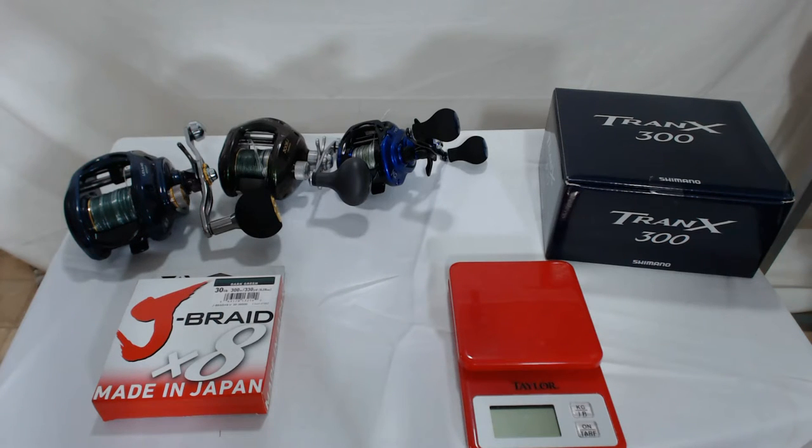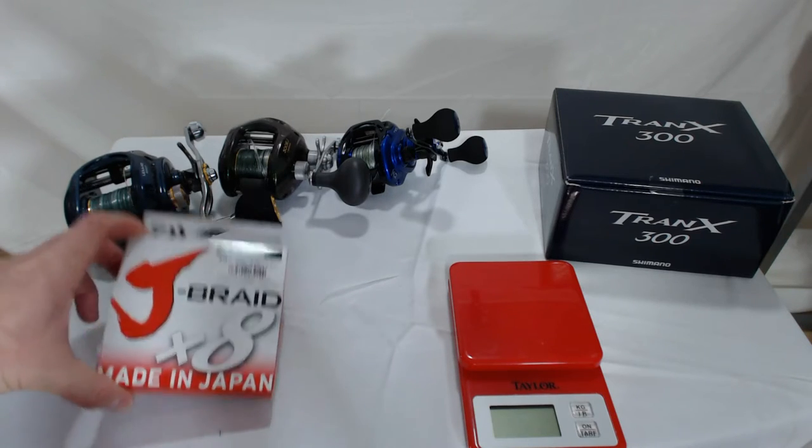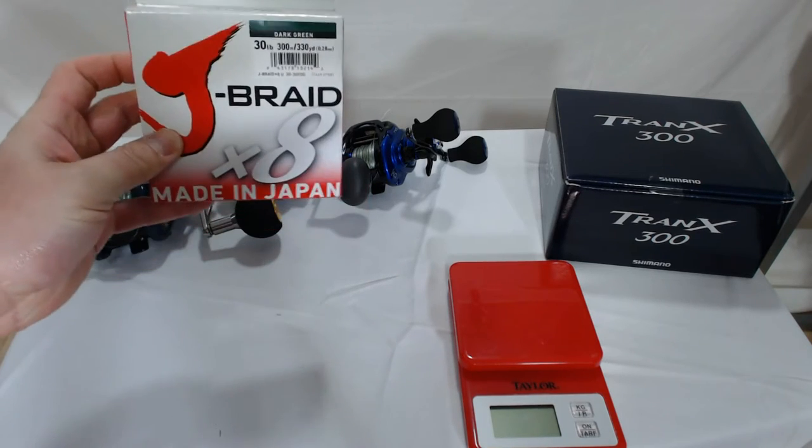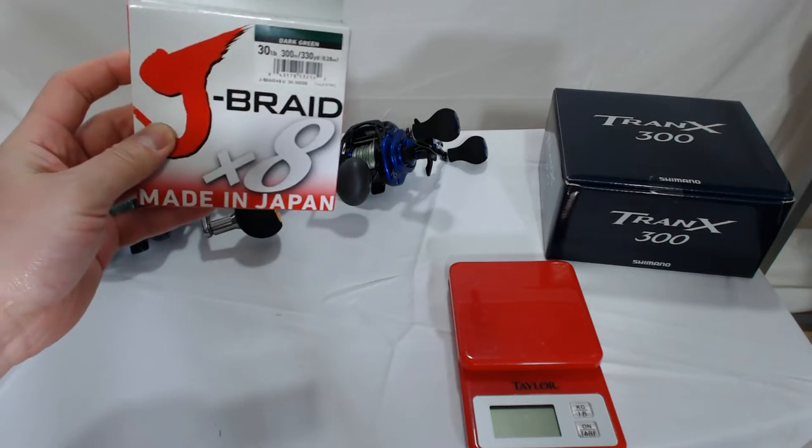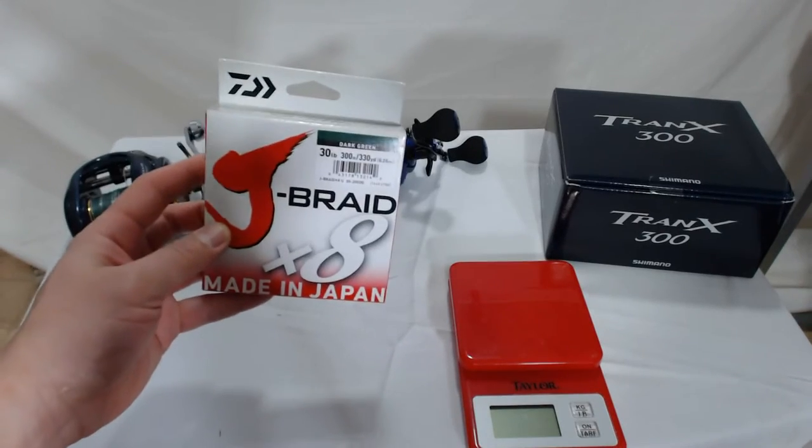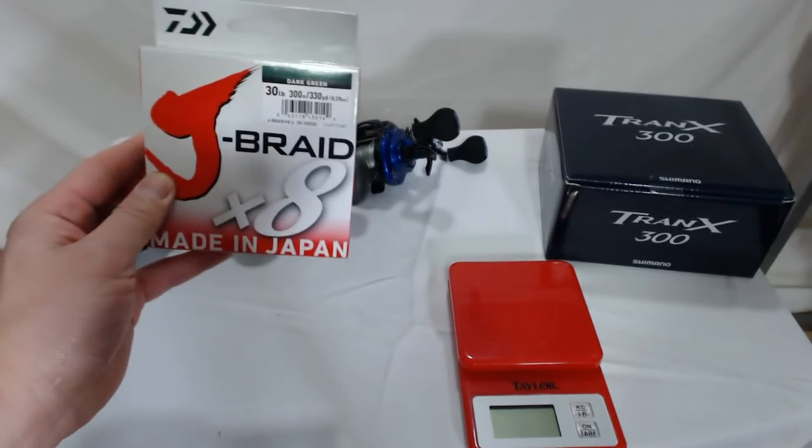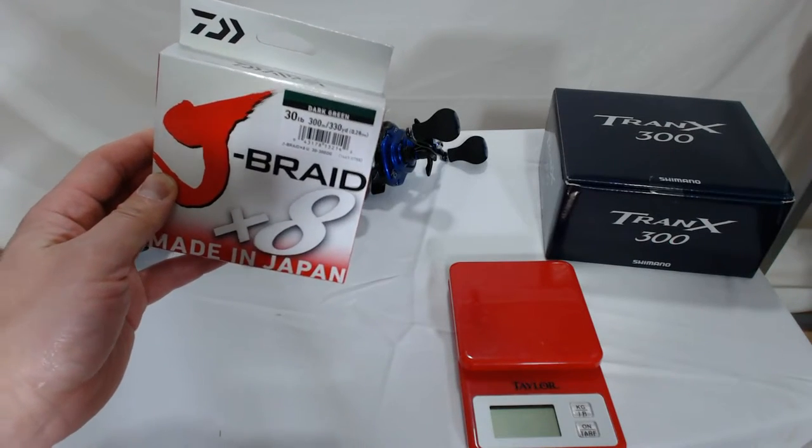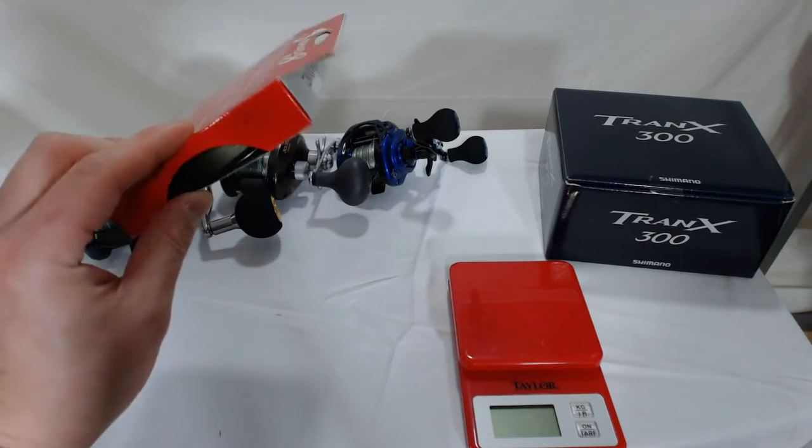I bought rods from Melton International Tackle and I think they have great customer service. On the reel I'll be putting on Jay Braid 30 pound test and this was also on sale on Amazon. I paid $16.76 for 330 yards of 30 pound test.